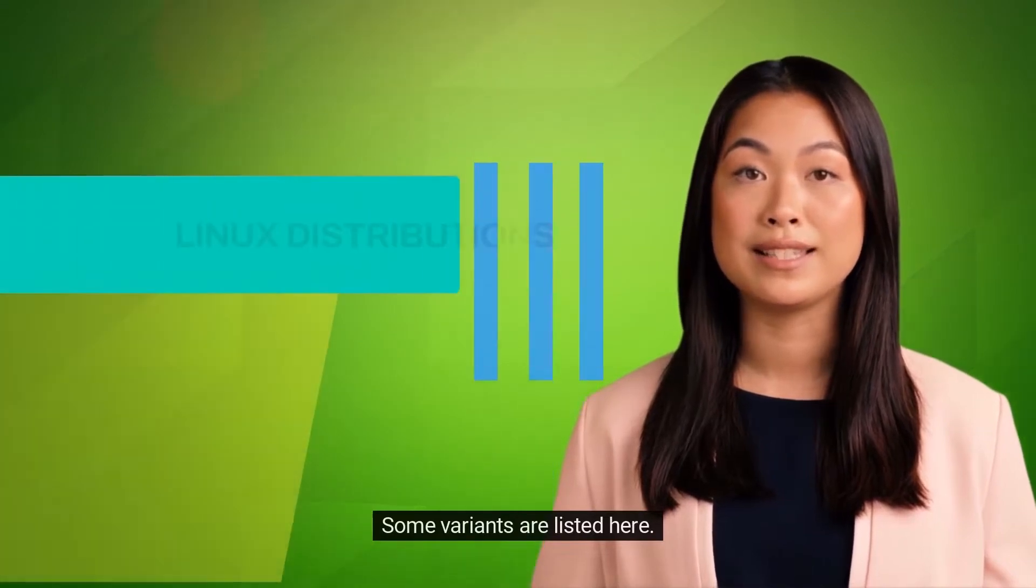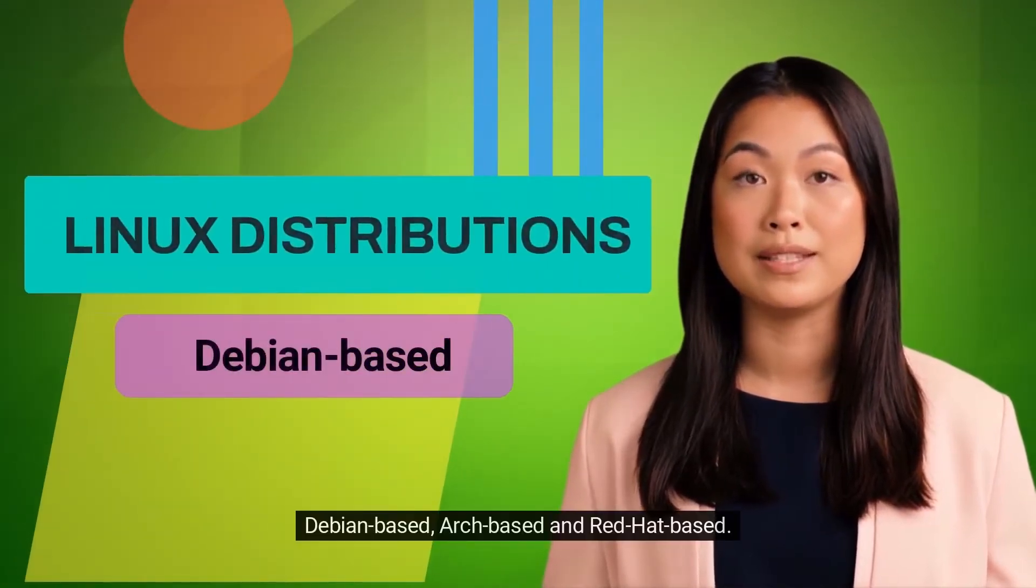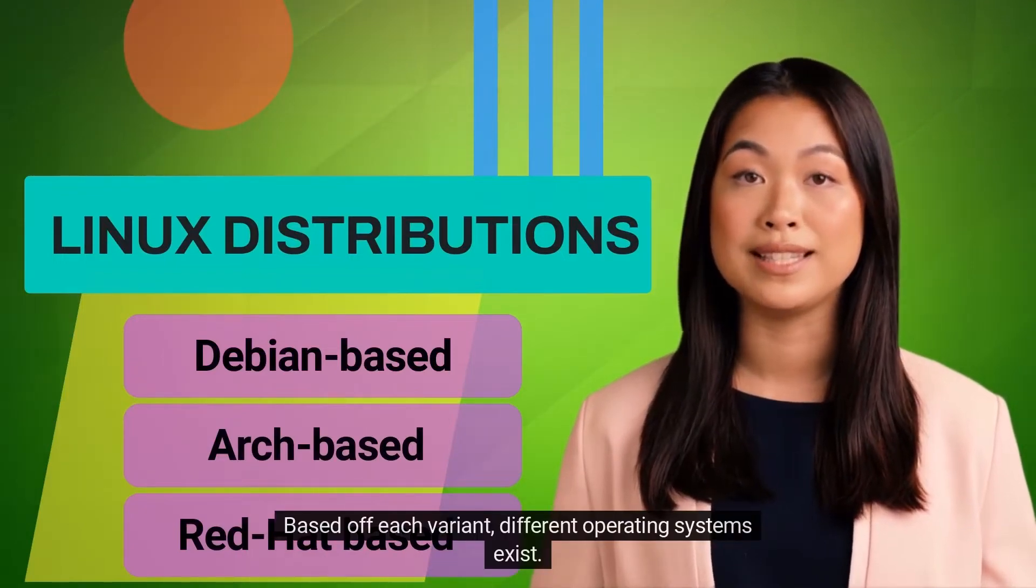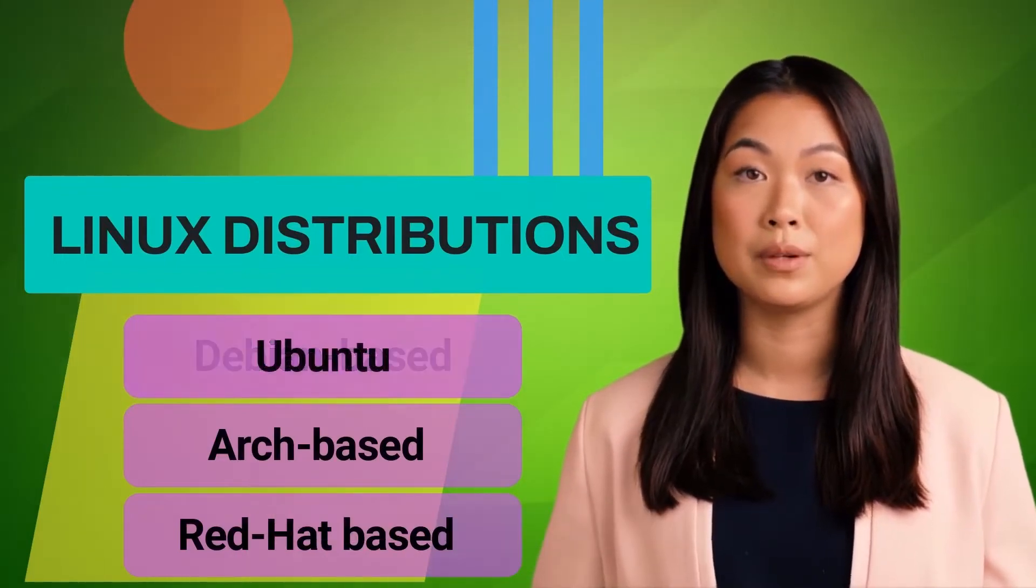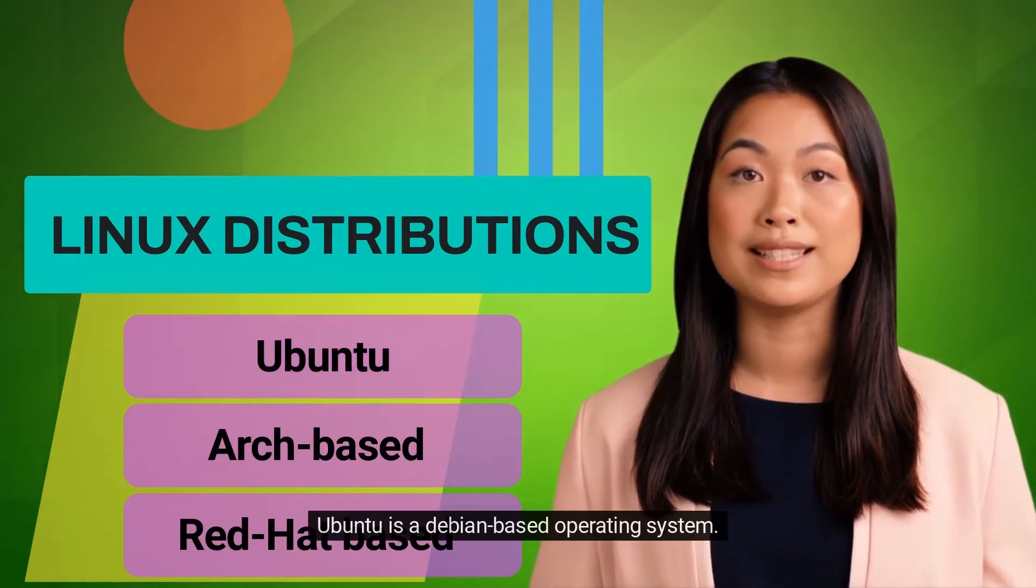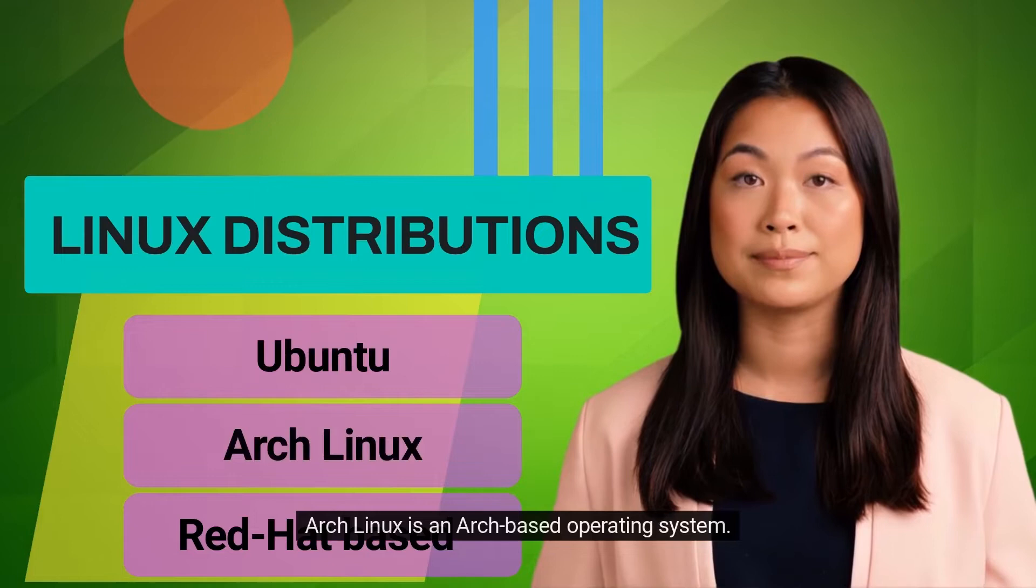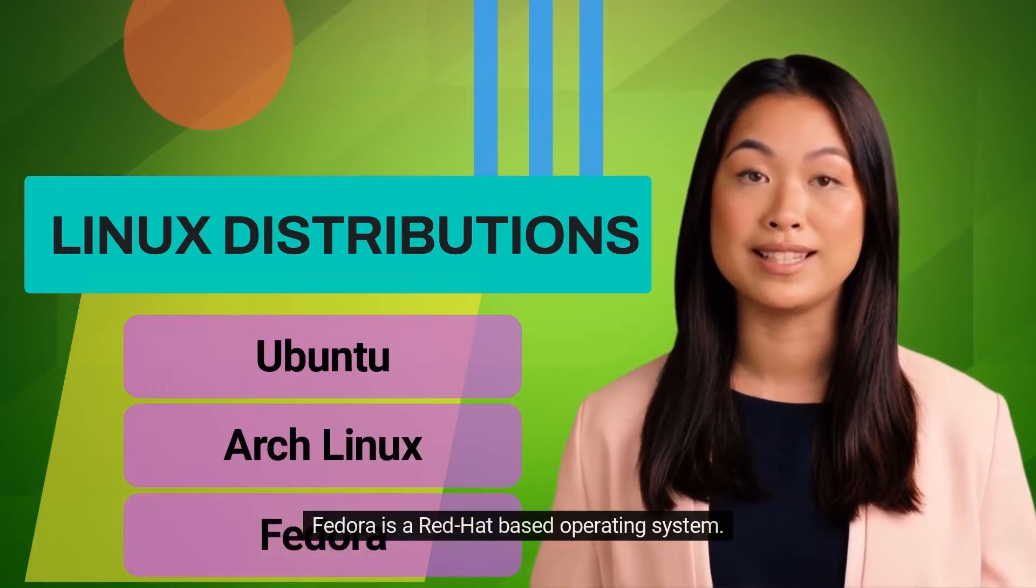Some variants are listed here. Debian-based, Arch-based, and Red Hat-based. Based off each variant, different operating systems exist. Ubuntu is a Debian-based operating system. Arch Linux is an Arch-based operating system. Fedora is a Red Hat-based operating system.